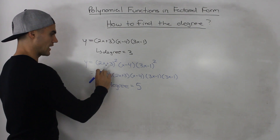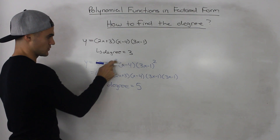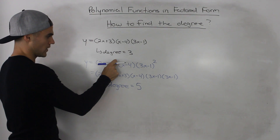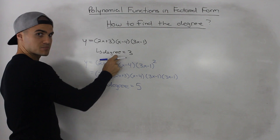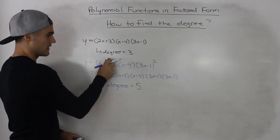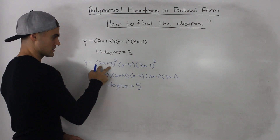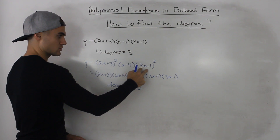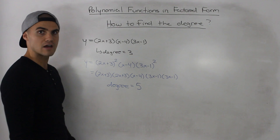You don't actually have to write it all out. Whenever you see a square or any exponent outside of a bracket, you just take whatever x is inside and know there's going to be that many x's. So 2, 1, 2 — that adds up to 5.